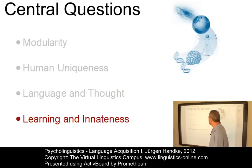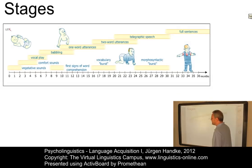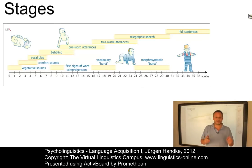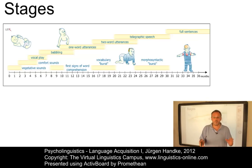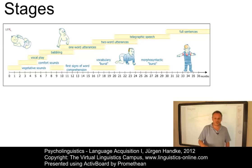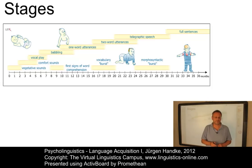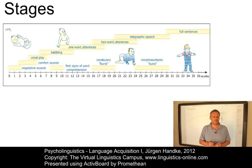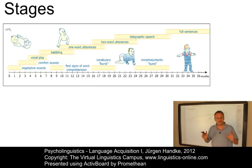Let us now look at the central stages of language acquisition. Language acquisition begins very early in the human lifespan. The ascent to adult-level competence is a complex process that involves several more or less distinct stages, leading from pre-speech sounds at the very beginning to full sentences at the end of the acquisition process. It is controversial whether or not discrete phases are involved in the course of language development. The diagram shown here displays the stages that are commonly identified in the relevant literature.